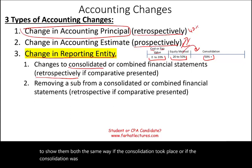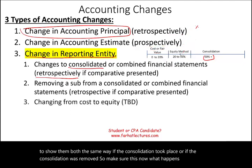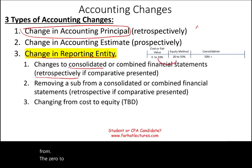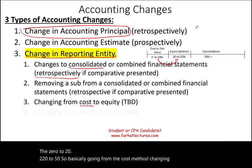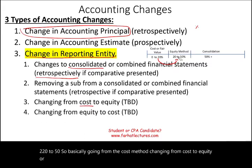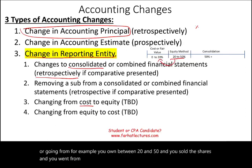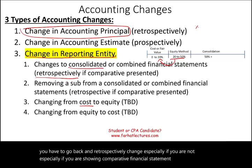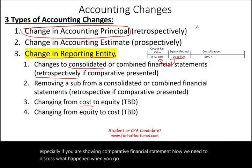Now, what happens if we go from 0-to-20 percent to 20-to-50 percent — basically going from the cost method, changing from cost to equity — or, for example, you owned between 20 and 50 percent and you sold the shares and went from equity to cost? Remember, when you go into consolidation you have to go back and retrospectively change, especially if you are showing comparative financial statements. We also need to discuss what happens when you go from equity to cost or cost to equity.